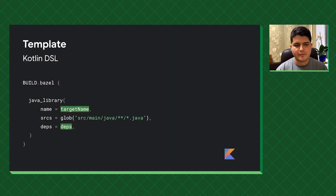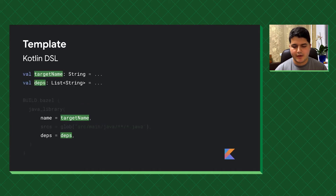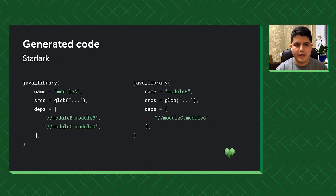Code generation happens using templates. For example, imagine a large project with hundreds of Java modules. Bazel scripts for those modules would have a lot in common — they all use Java rules with similar configurations. By using templates, you can define a general skeleton for all modules while having placeholders for unique data. Those placeholders can be filled in with regular Kotlin variables. When using a template, you can generate multiple Bazel scripts for multiple modules — they will be similar overall but with different unique details, such as the module name and its specific list of dependencies.